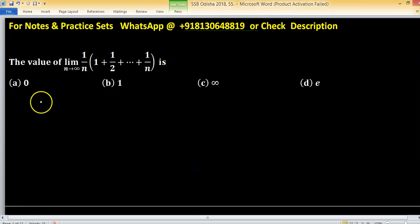In this given problem, we have to find the limit of the given expression 1 upon n times the quantity 1 plus 1 upon 2 plus 1 upon 3 and so on up to 1 upon n.